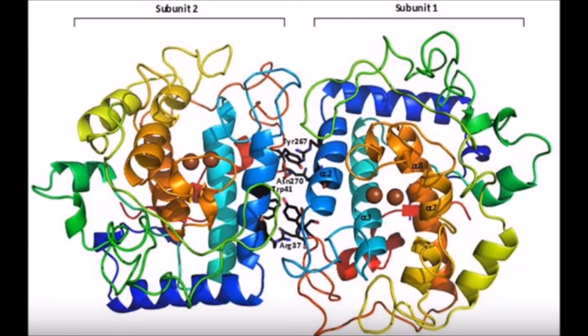This binuclear copper center is the location of the active site and is where the oxygen molecule binds to create the oxy form of tyrosinase. In humans, tyrosinase contains 377 amino acids and is located on chromosome 11. It exists as a dimer in a globular formation consisting of a mixture of alpha helices and beta sheets.